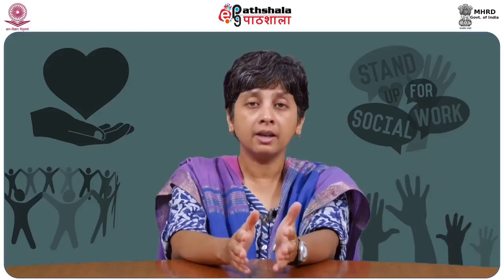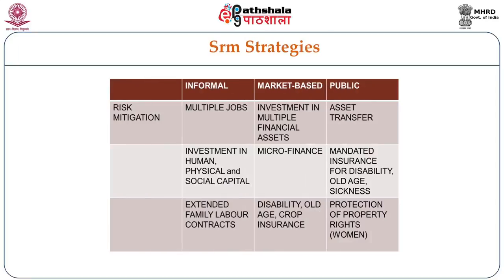Looking at risk mitigation strategies: in the informal column, people can hold more than one livelihood stream and do many jobs. Investment in human, physical, and social capital means building good networks, educating oneself, and investing in physical property. Extended family labor contracts are an example of a risk-mitigating strategy where one depends on family and kinship networks to obtain labor without paying full market wages.